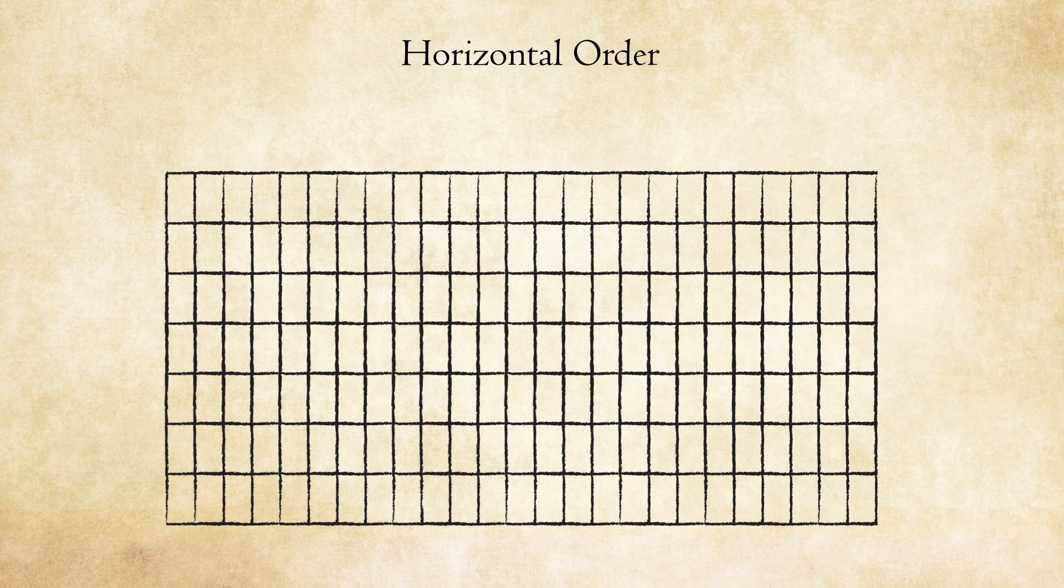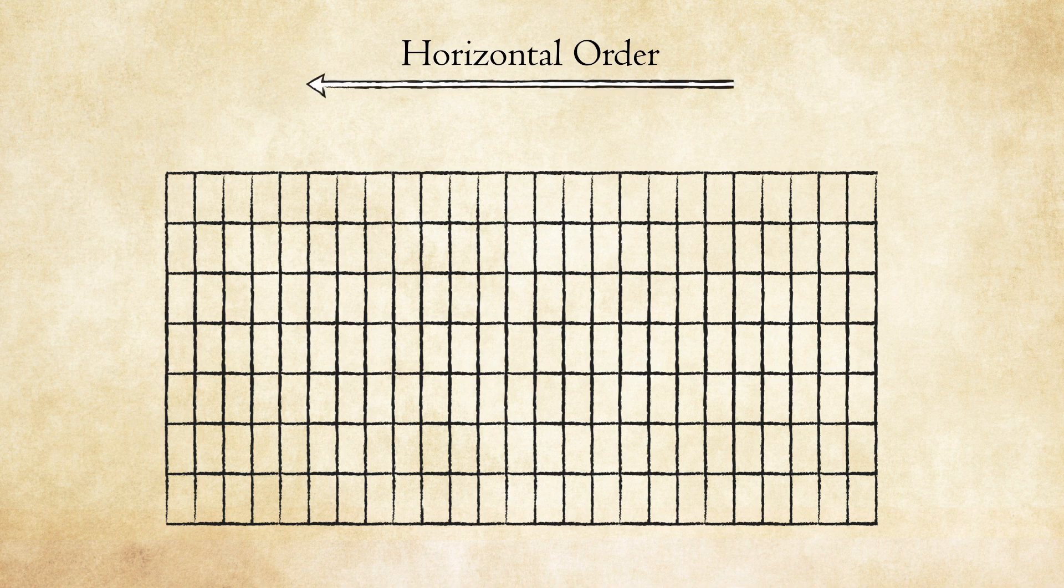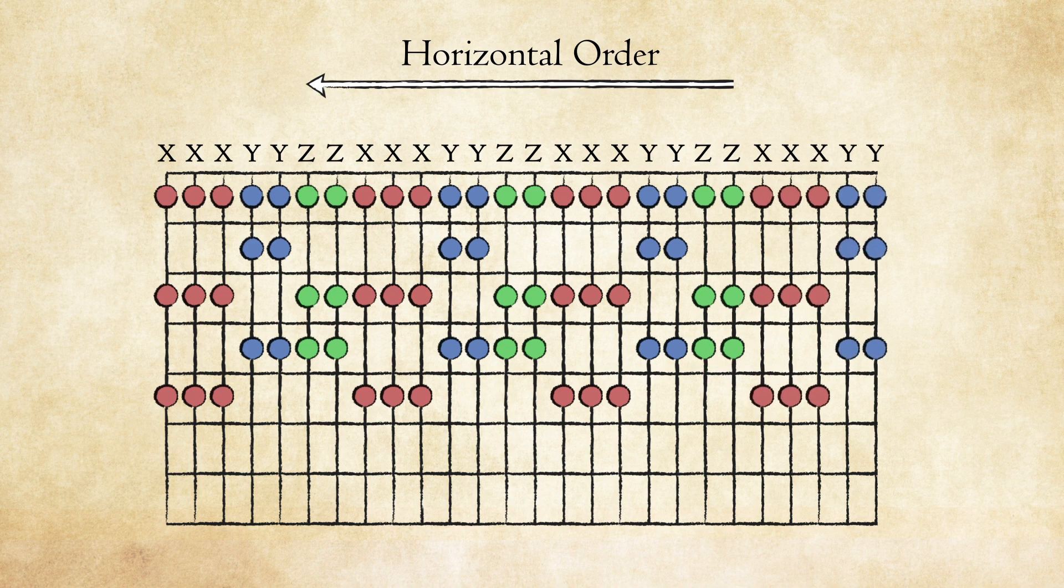Our shape order remains the same. However, since we're going backwards, we progress from the right to the left. Meaning, instead of moving from X to Y to Z and then back to X, we'll be moving from Z to Y to X and then back to Z.